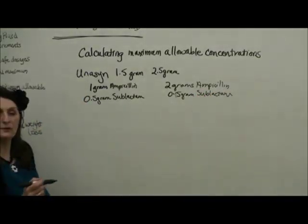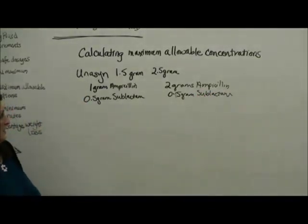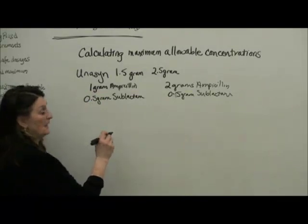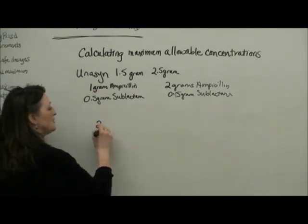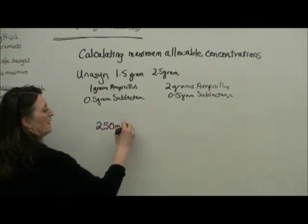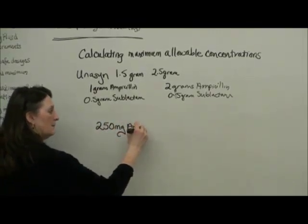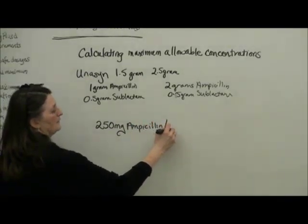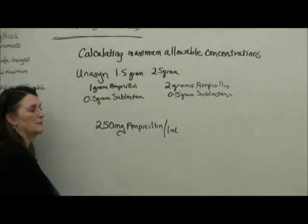When we dilute Unasyn, which we're going to do in our medication simulation lab, the final concentration when we mix up this medication is we have 250 milligrams of ampicillin in 1 milliliter of drug.